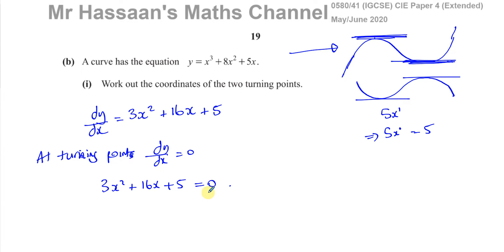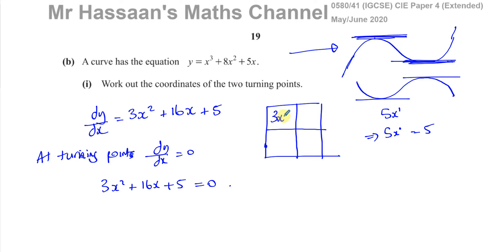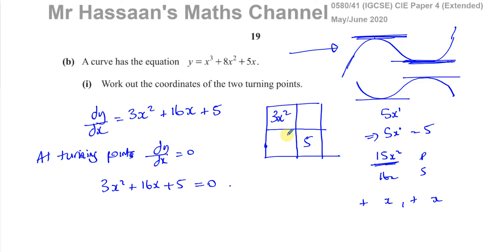Now I have to factorize this to find the values of x. The way I prefer is a box method: put the x² term and the constant term — 3x² and 5 — in two squares, then multiply them together to get 15x². You're finding two numbers that multiply to give 15x² and whose sum is the middle term, 16x. The two terms are going to be positive x terms. The only two terms possible are 15x and x: multiplying gives 15x², adding gives 16x.